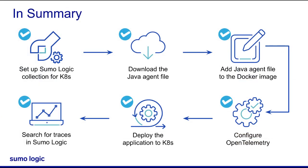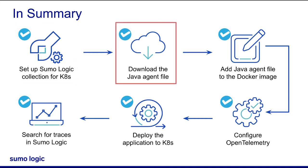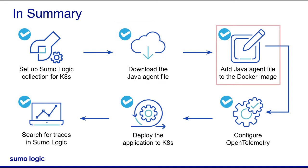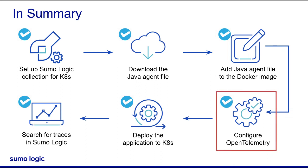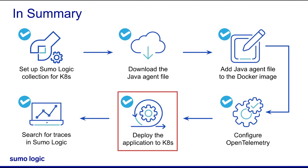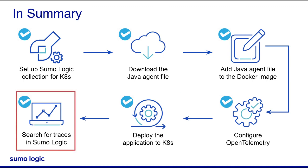Let's quickly recall the steps we covered in this video. I started with setting up a Sumo Logic Kubernetes collection. Then, I downloaded the Java agent for the OpenTelemetry Java instrumentation in .jar format. Then, I created a Docker image and added OpenTelemetryJavaAgent.jar to the Docker image of the Java application. Next, I configured the OpenTelemetry instrumentation by updating the application for Kubernetes deployment. Finally, I deployed the application to Kubernetes, and then searched for and viewed the transaction traces of the app in Sumo Logic. I hope this video helps you understand the process to auto-instrument a Java app with OpenTelemetry, deploy it on Kubernetes, and trace the transactions in Sumo Logic. Thank you for joining.